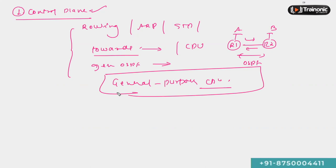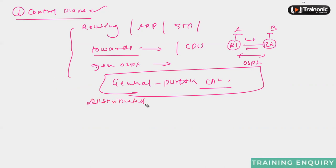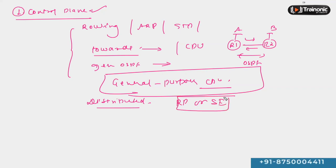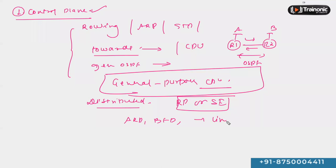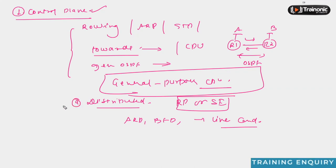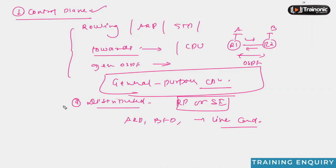We do have some devices that follow distributed architectures. In a distributed architecture we have something called a route processor or supervisor engine, which is responsible to do all CPU-intensive tasks. Major protocols run under this route processor or supervisor engine. However, some protocols such as ARP, BFD, and ICMP are sent to the line cards of the device rather than running on the centralized route processor. This applies only if your device has a distributed architecture, such as high-end switches.